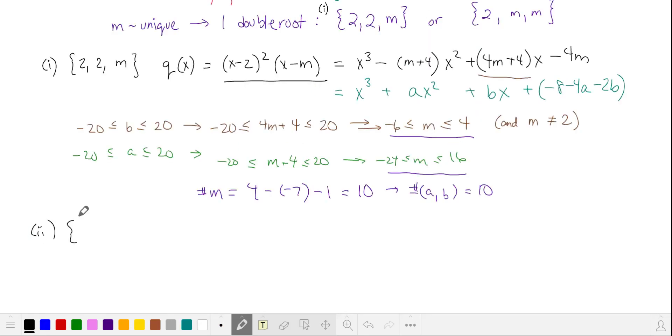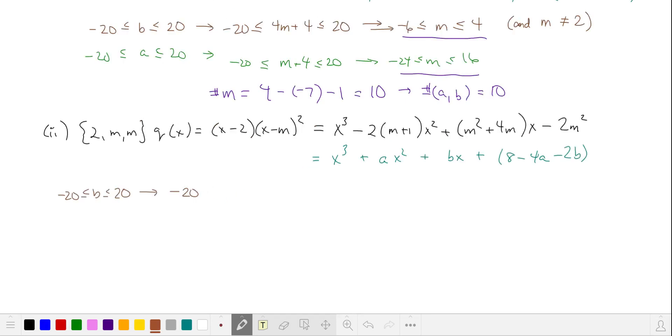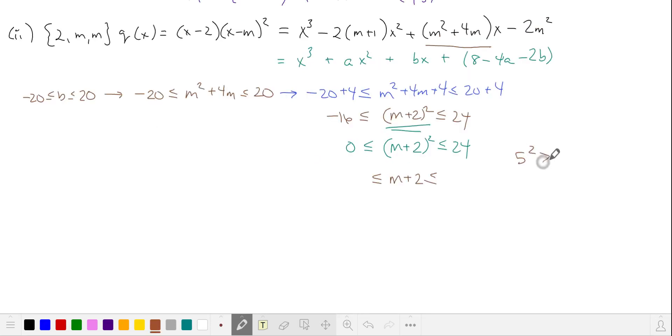Let's go on to case 2, where our double root is m. So this is our polynomial, and we'll expand it, and we'll compare it to our coefficients. With b being an integer between negative 20 and 20, we'll substitute m squared plus 4m. To solve this, we'll need to complete the square by adding 4 to all three parts of our chain inequality. In the center, we have the square of m plus 2. This middle part is a perfect square, so it's actually greater than or equal to 0. Since 5 squared is too big, m plus 2 must be less than or equal to 4 or greater than or equal to negative 4.